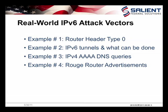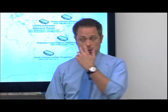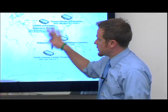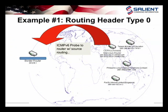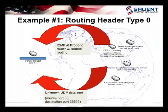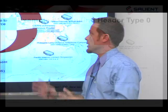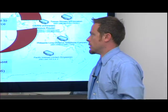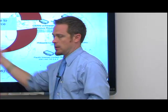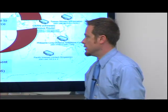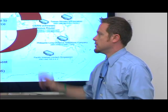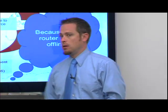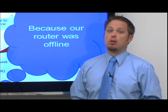The third example is IPv4 Quad-A DNS queries, and the fourth is rogue router advertisements. For that first example, as you can see here, a Chinese router was actually sending IPv6 ICMPv6 probes to our router using source routing. We were able to detect this with a security appliance known as Assure 6 on our network. They were sending botnet traffic via UDP using source port 80 to our border router. The good thing was that router was not online at the time.